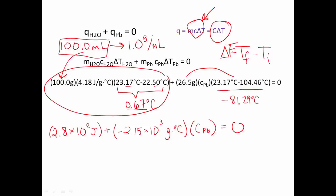So what I'm going to do is I'm going to put this over on the other side of the equation. So we have negative 2.15 × 10³ grams degrees Celsius times our C of Pb. That is equal to negative because we have to subtract 2.8 × 10² joules.